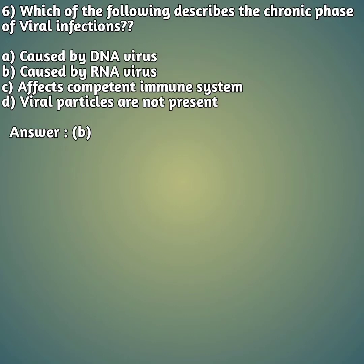Sixth question: which of the following describes the chronic phase of viral infection? Option A: caused by DNA virus. Option B: caused by RNA virus. Option C: affects competent immune system. Option D: viral particles are not present. The right answer is B — caused by RNA virus. The chronic phase is a slow infective phase caused by RNA viruses, while the acute phase is caused by DNA viruses.